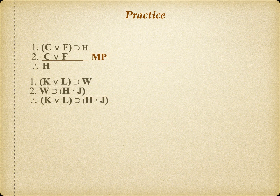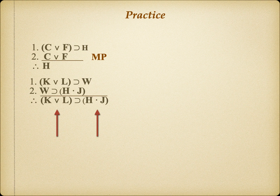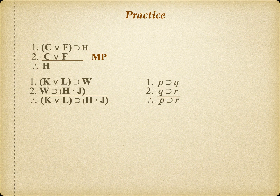In this second syllogism, the form may be a little easier to spot. Notice the repetition of W in both premises, but not in the conclusion. Also note that the element of the conclusion is the antecedent of the first premise, while the consequent is from the second. If we put it into universal variables, we'd have: if p then q, and if q then r, therefore if p then r. This is a hypothetical syllogism.